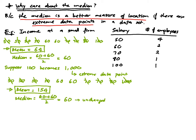In this video we talked about the median — how to find it, and through this example showed that when you have extreme data points in a data set, the median is a better measure of location than the mean, because the mean can be easily changed by those extreme values.